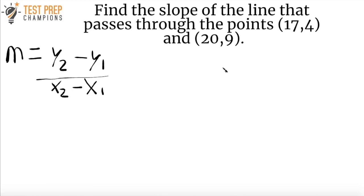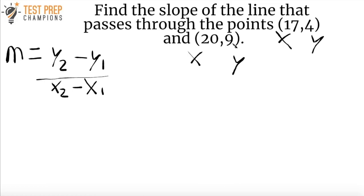Let's go over how to do this question. We know it's a slope question and the formula is m equals y2 minus y1 over x2 minus x1. We're given two pairs of coordinate points. Remember, we always write the x-coordinate first — so 17 is an x-coordinate, 4 is a y-coordinate, 20 is an x-coordinate, and 9 is a y-coordinate. So is 17 x1 or x2? Remember, it's up to you to choose. I can make 20 x2 if I want, then 9 becomes y2, and I have to make 17 x1 and 4 y1.